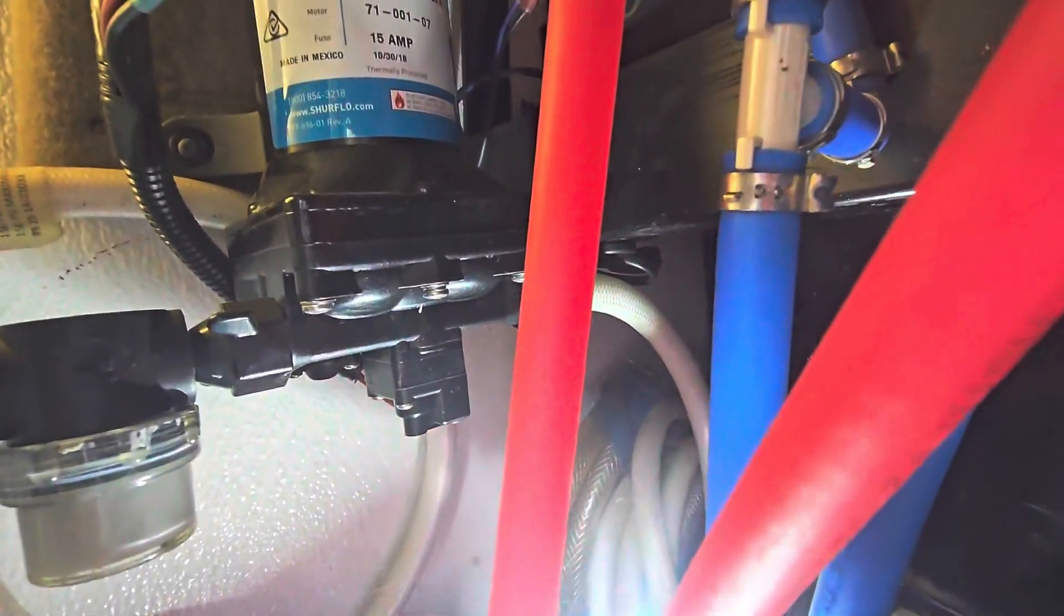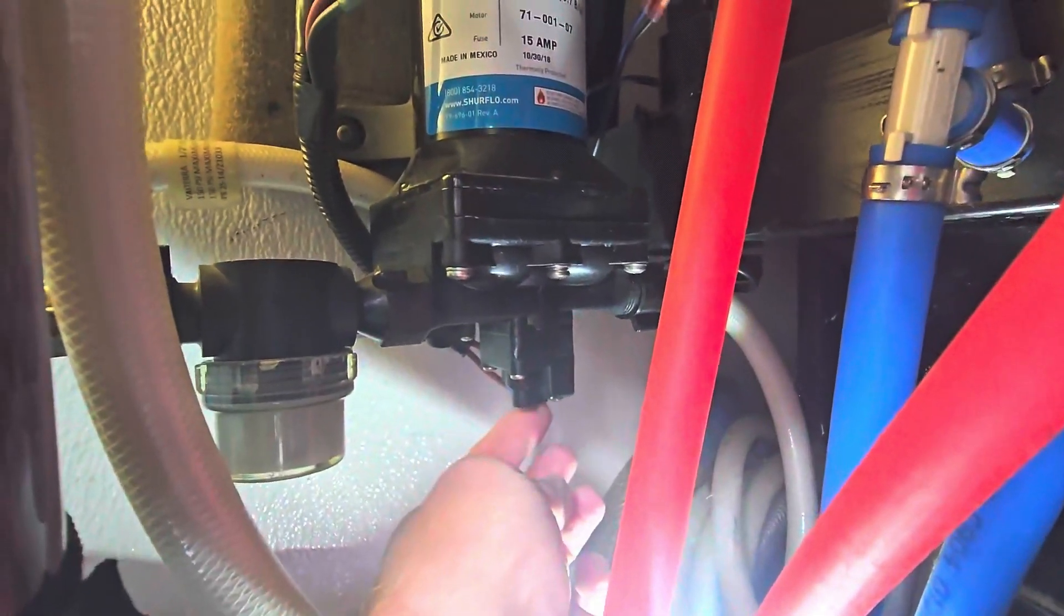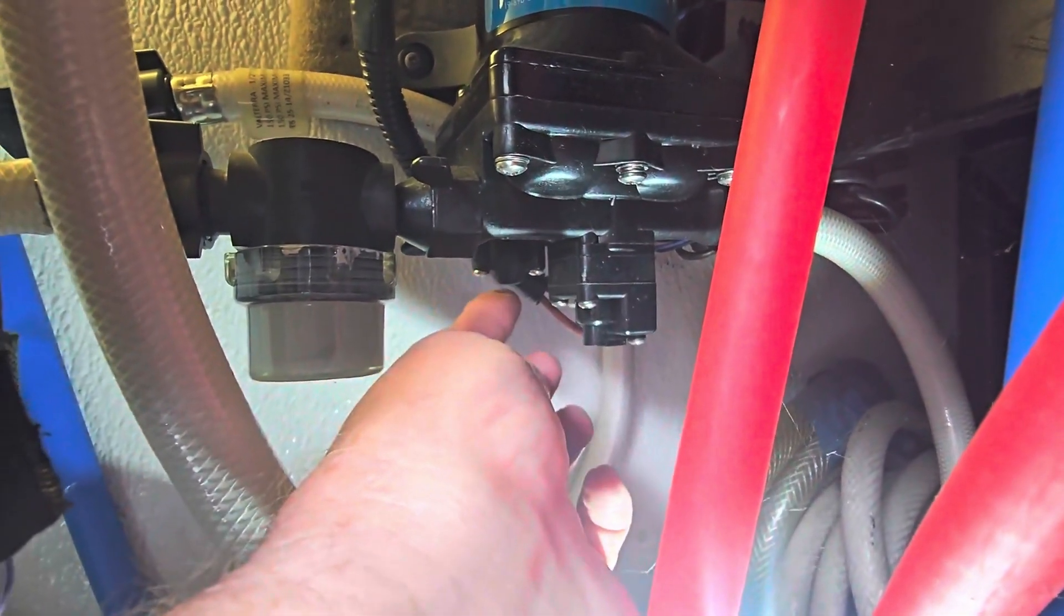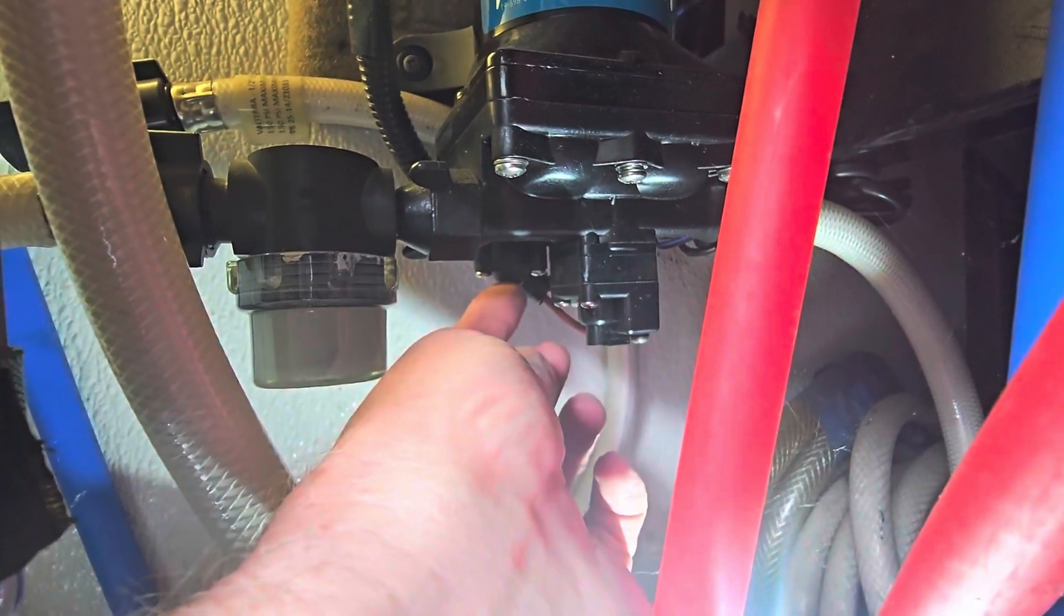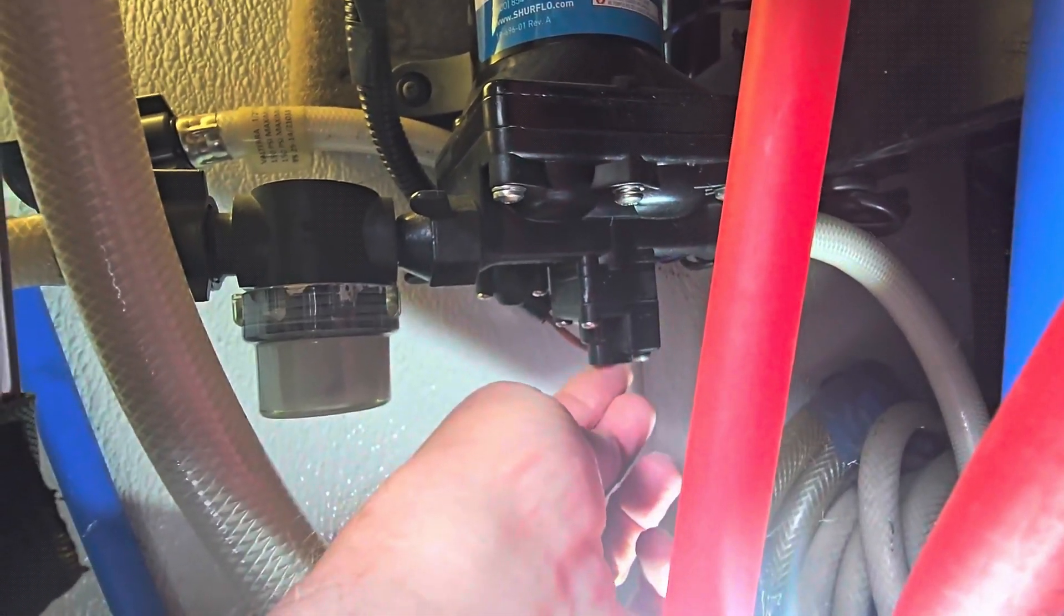This is the pressure switch. Over here that's the bypass adjustment, there's a little allen head screw there, and there's also an allen head screw here to adjust the pressure.